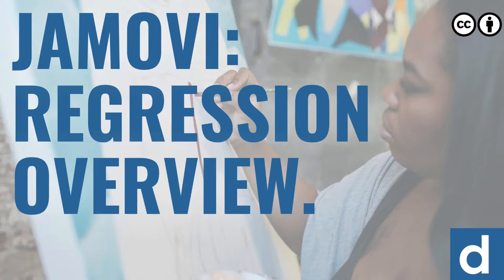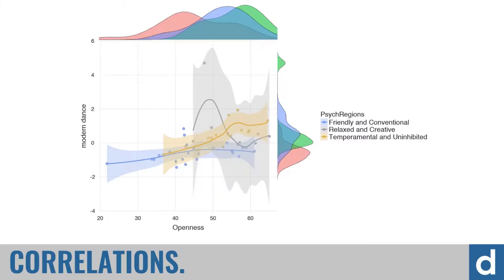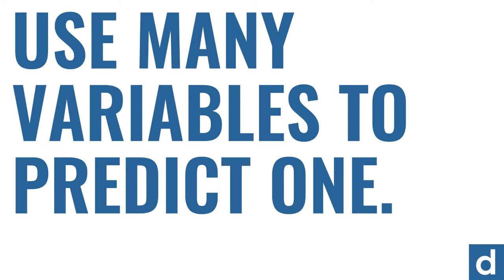In our next chapter on regression in Jamovi, we're going to look at associations, specifically through correlation and scatter plots. We're also going to look at the ways we can use many variables to predict scores on one variable, how we can use predictor variables to look at an outcome or criterion variable.